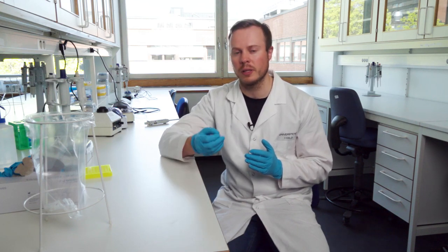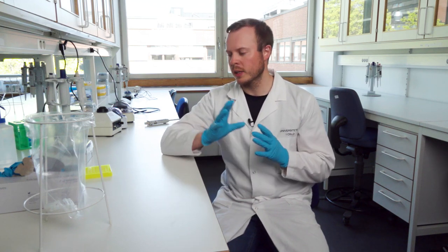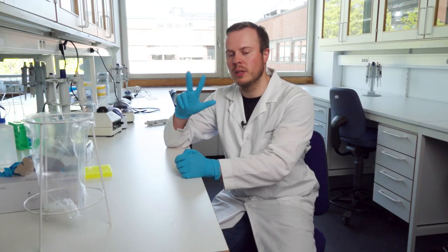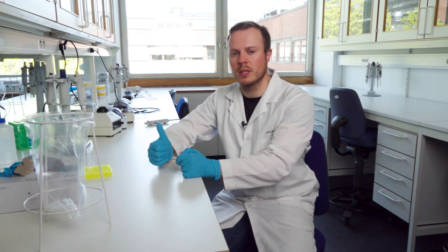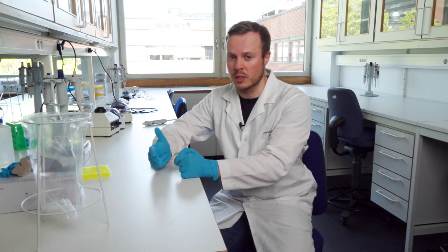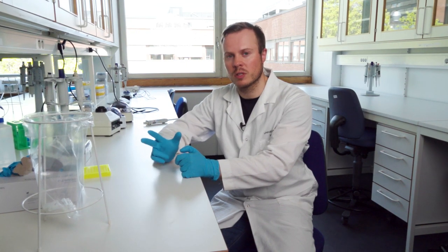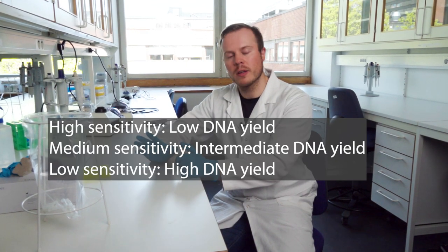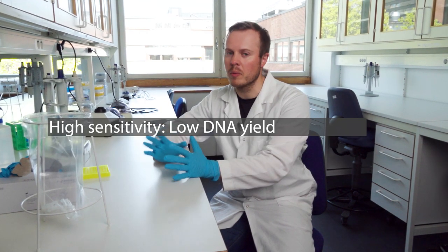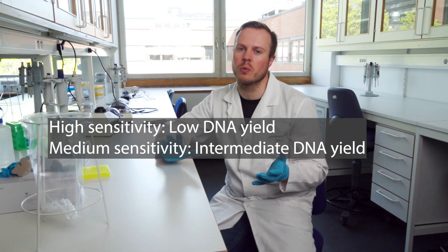So here it's very important to follow the procedure, and in the procedure you have three different ways of doing it. The first way is the high sensitivity, you have a medium sensitivity, and you have a low sensitivity. These are specialized for different amounts of DNA in your sample. For example, you can use the high sensitivity to quantify samples that have low amounts of DNA, and then the medium range, which is the one I think fits most of the samples we are working with right now.